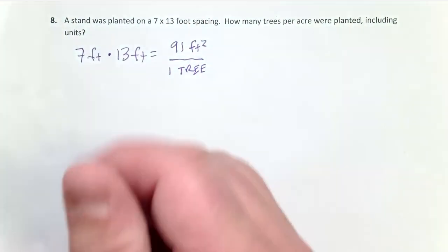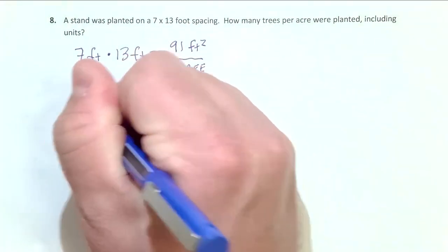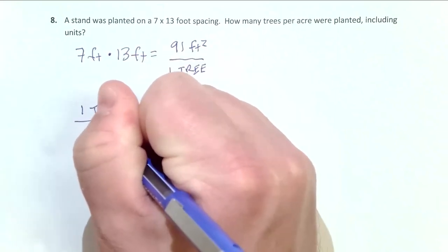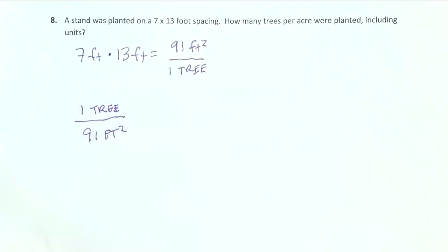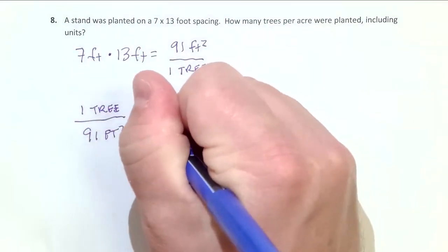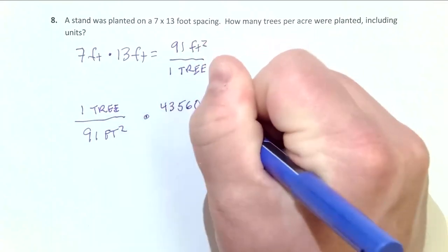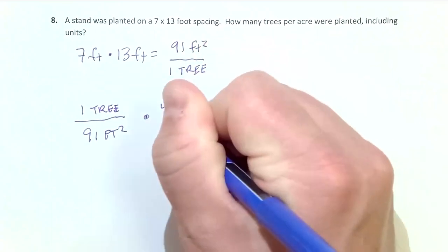We take the inverse of this ratio. So I'm going to go one tree per 91 square feet, and I'm going to multiply that by 43,560 feet squared in one acre of land.